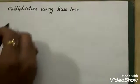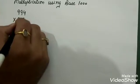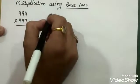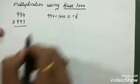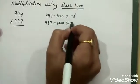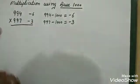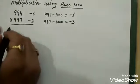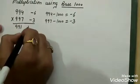Now let's start doing multiplication using base 1000. Let's take the example 994 multiply 997. The base is 1000, so 994 minus 1000 gives minus 6, and 997 minus 1000 gives minus 3. We place minus 6 and minus 3. Now, 994 minus 3 is 991, and 997 minus 6 is also 991. Then 6 times 3 is 18.